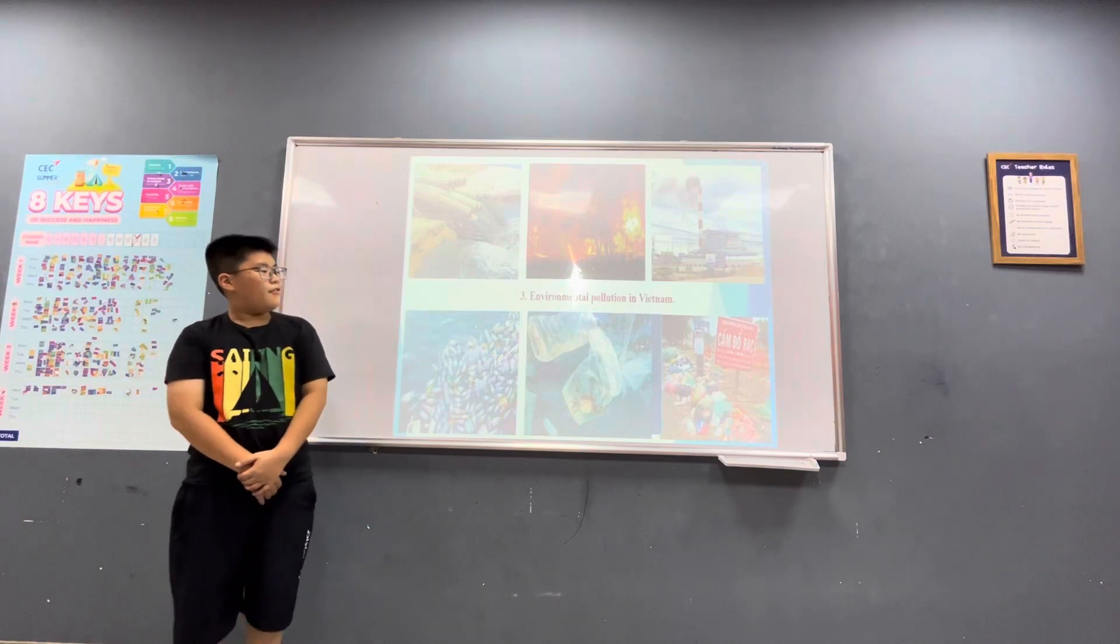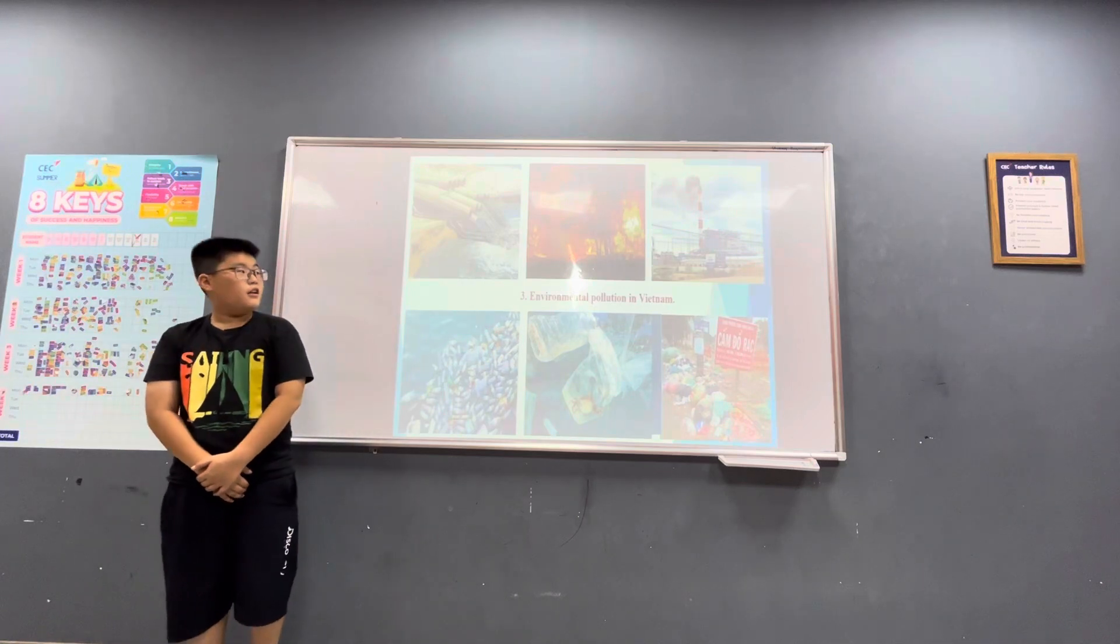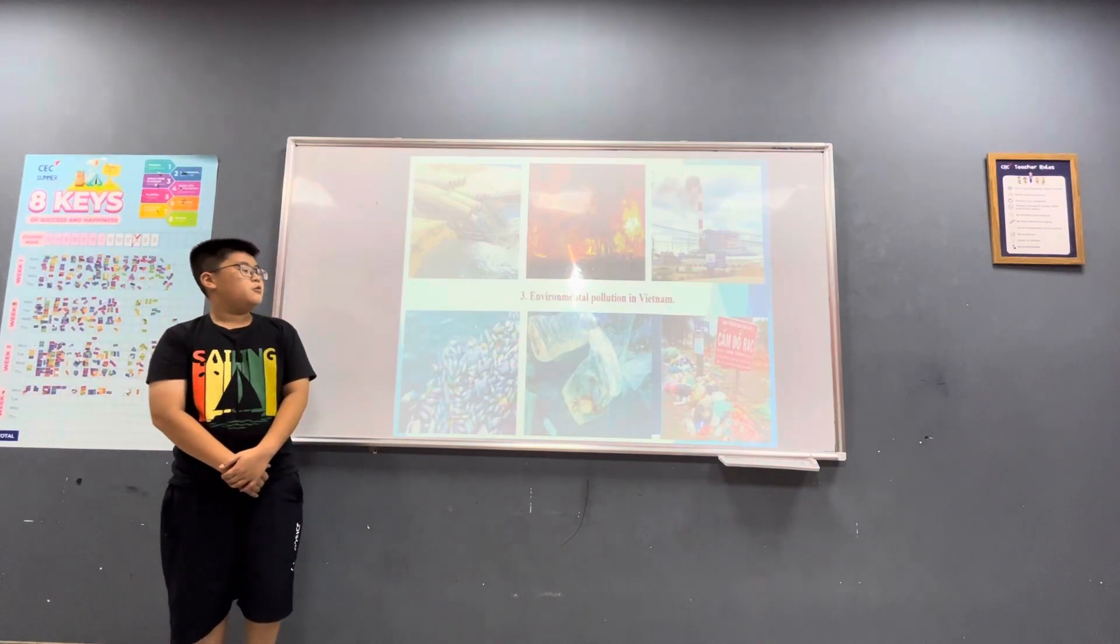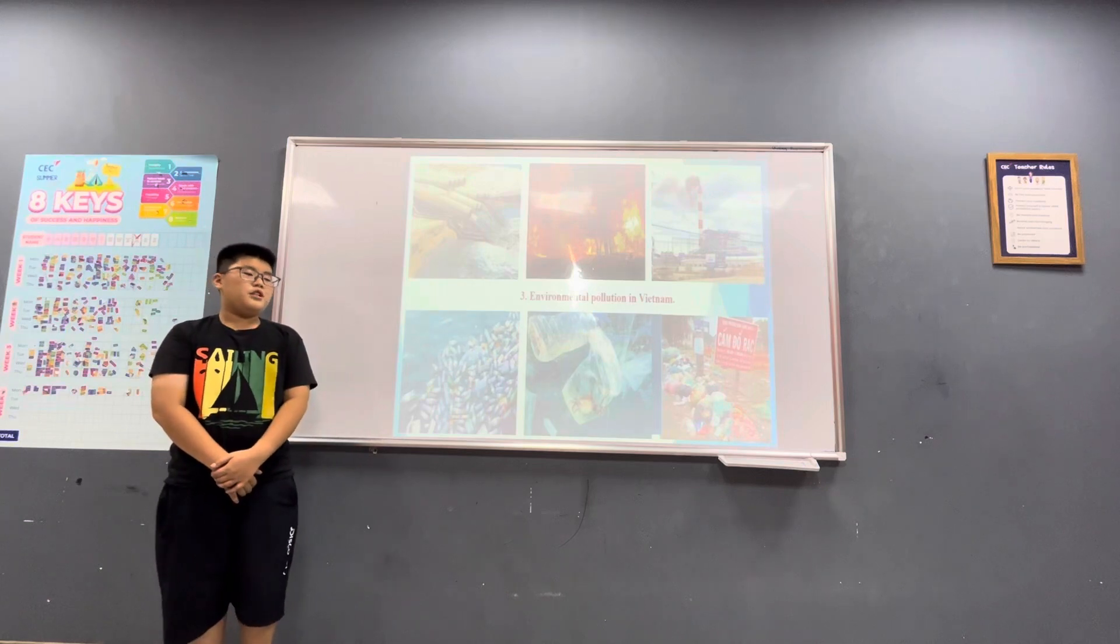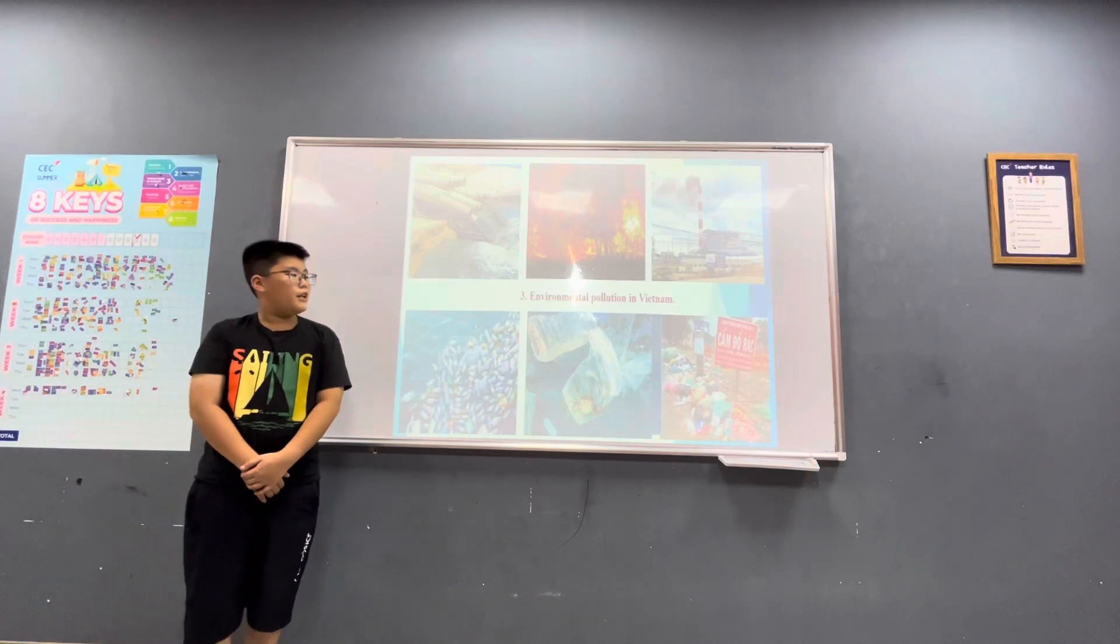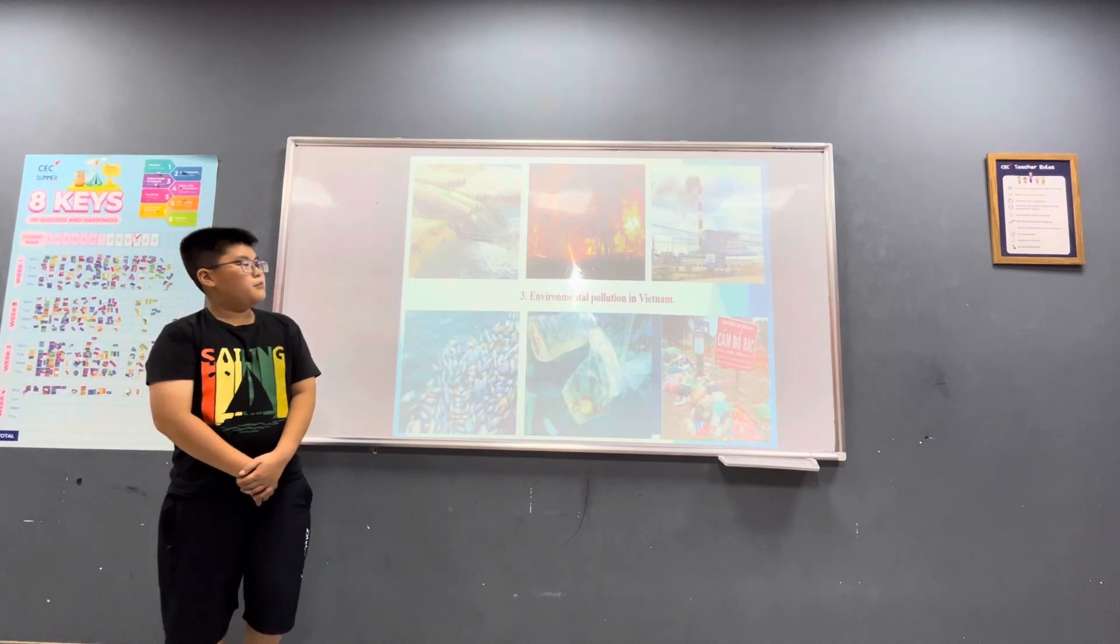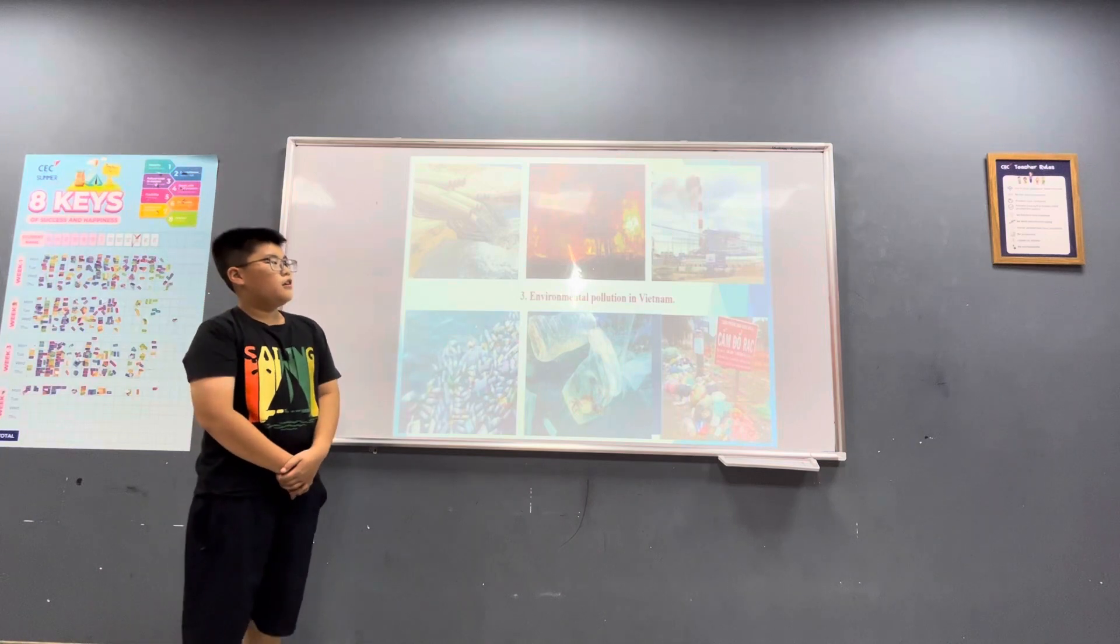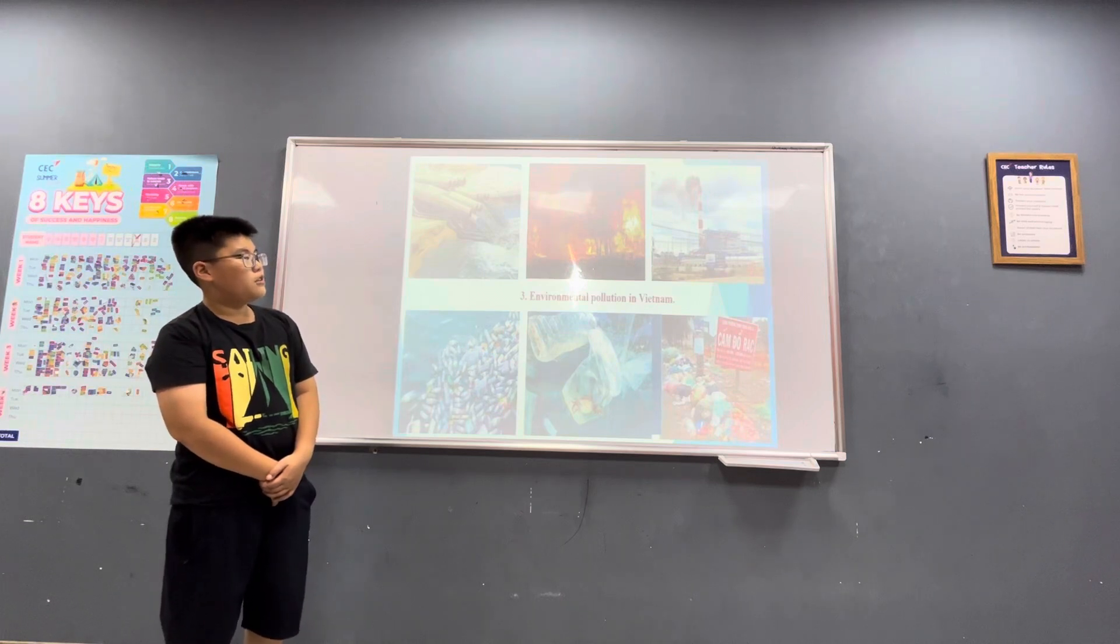The third part is environmental pollution in Vietnam. The first picture is water pollution. Where it comes from? It comes from some communities. They discharge it to the river and sea because they don't have any sewage treatment system. Next, we have land pollution and air pollution. It's sometimes from climate change and humans. Next picture, we see some factories discharge toxic gas. It causes air pollution.